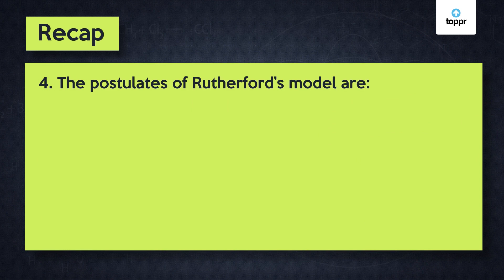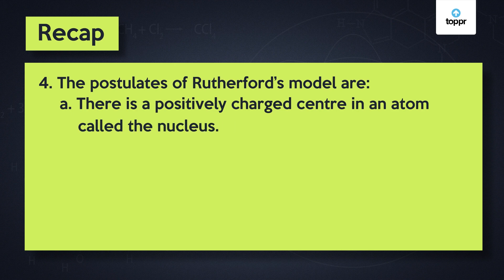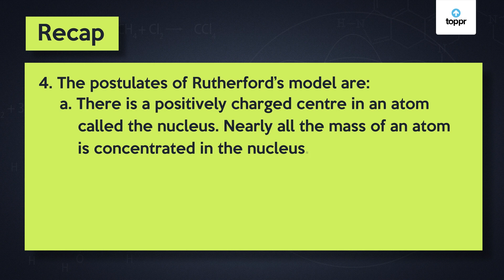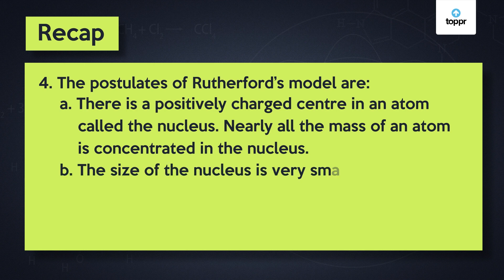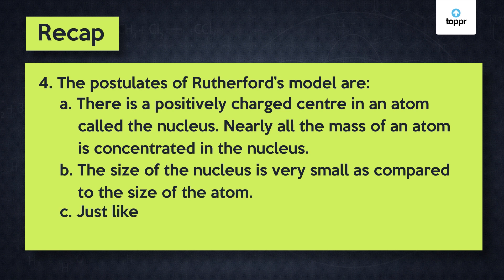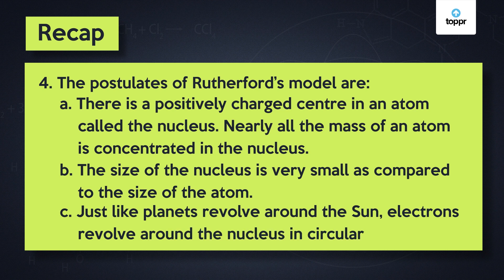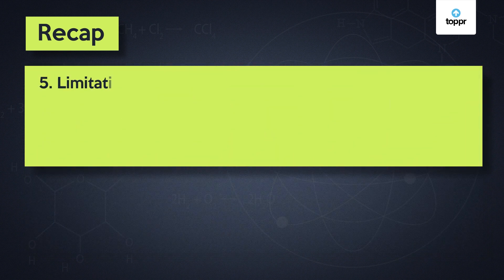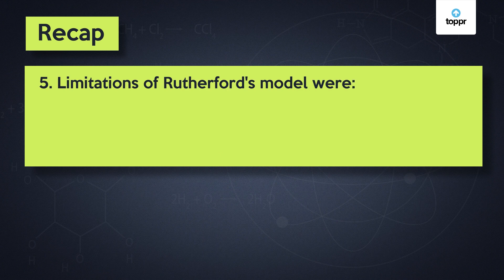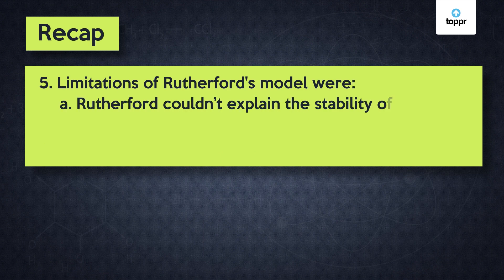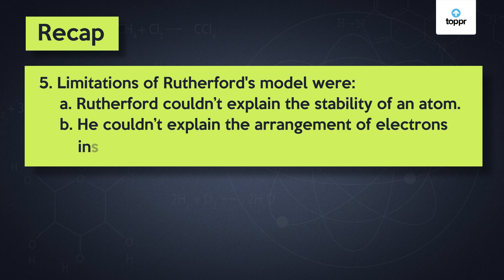All the positive charge and mass of the atom is concentrated in the nucleus. The postulates of Rutherford's model are: there is a positively charged center in an atom called the nucleus; nearly all the mass of an atom is concentrated in the nucleus; the size of the nucleus is very small as compared to the size of the atom; and just like planets revolve around the sun, electrons revolve around the nucleus in circular orbits. The limitations of his model were: Rutherford couldn't explain the stability of an atom, and he couldn't explain the arrangement of electrons inside an atom.